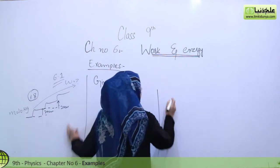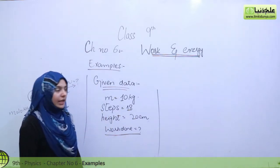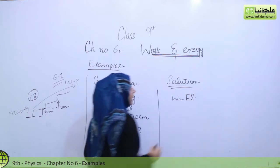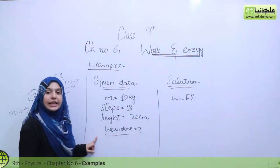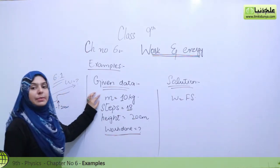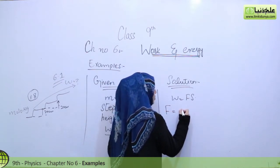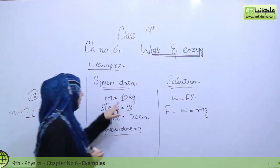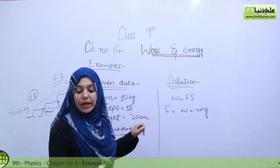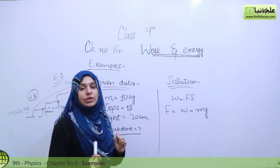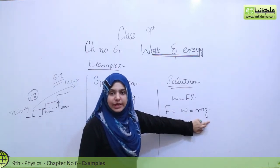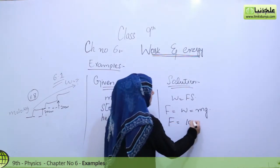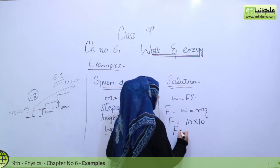First of all, we will look at the formula we need. Work done formula: W equals to F times s. Force is not directly given, so we find it. Force equals weight, and weight equals mg. Mass is given as 10 kg, and g equals 10 m/s². So force equals 10 times 10, which is 100 N.